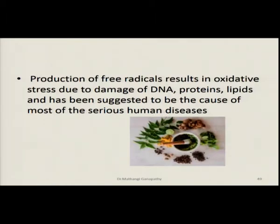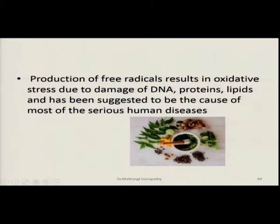Free radicals are released in the human body as part of normal metabolism. This happens during the mitochondrial electron transport chain and during lipid peroxidation. Usually in a human system, the free radicals created would be scavenged by antioxidants which are part of our diet, and our body itself has mechanisms to protect against free radicals. It is when the proportion of free radicals becomes so increased that the body cannot scavenge them fast enough that this becomes the causative reason for many human diseases.